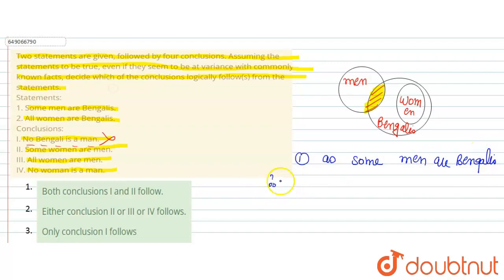Therefore, some Bengalis are also men. Some Bengalis are also men. The yellow part - this means the first one is wrong.